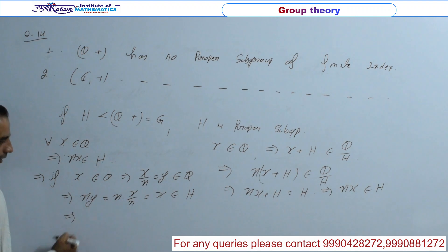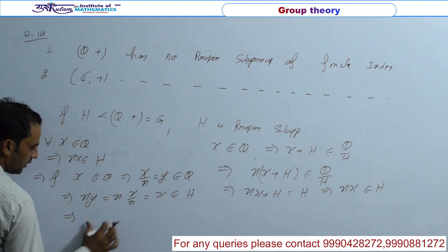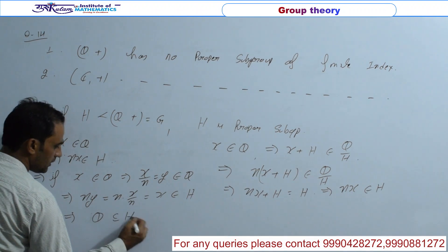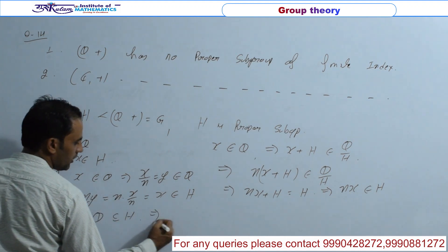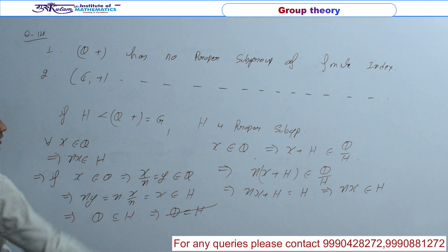तो this implies for every X belongs to Q, X belongs to H. तो H क्या आ गया? Sorry, Q क्या हो गया? Contained हो गया है H में? और H already subgroup है Q का. तो this implies Q should be equal to H, which is a contradiction because we assumed H is a proper subgroup.